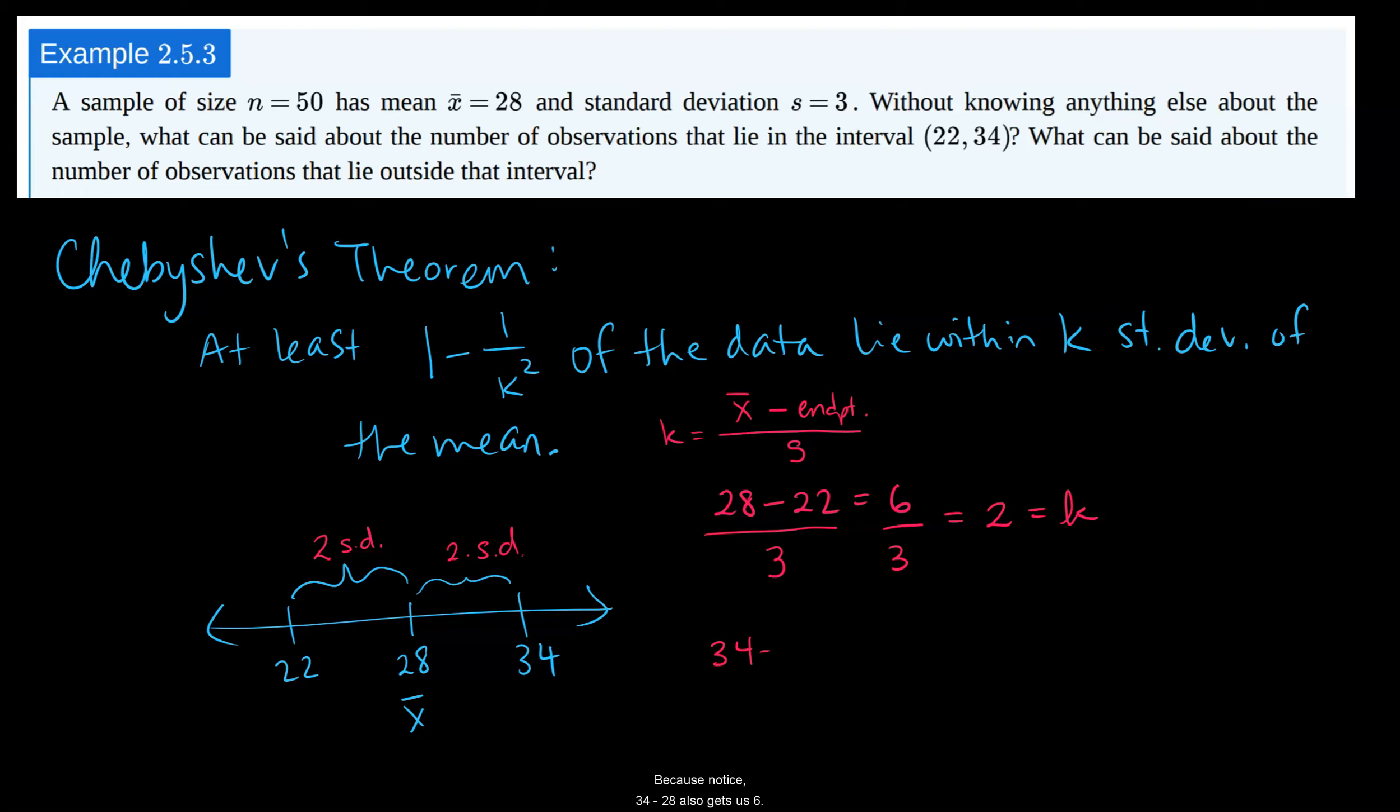Because notice, 34 minus 28 also gets us 6. We get the same value. And the only reason I switched the subtraction here is to make sure that I'm getting a positive value for k.